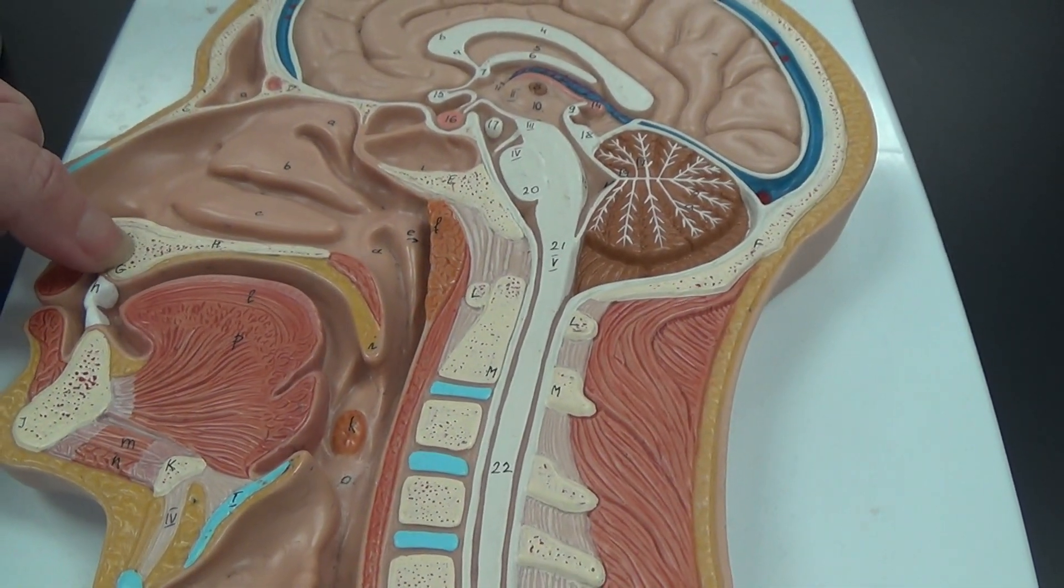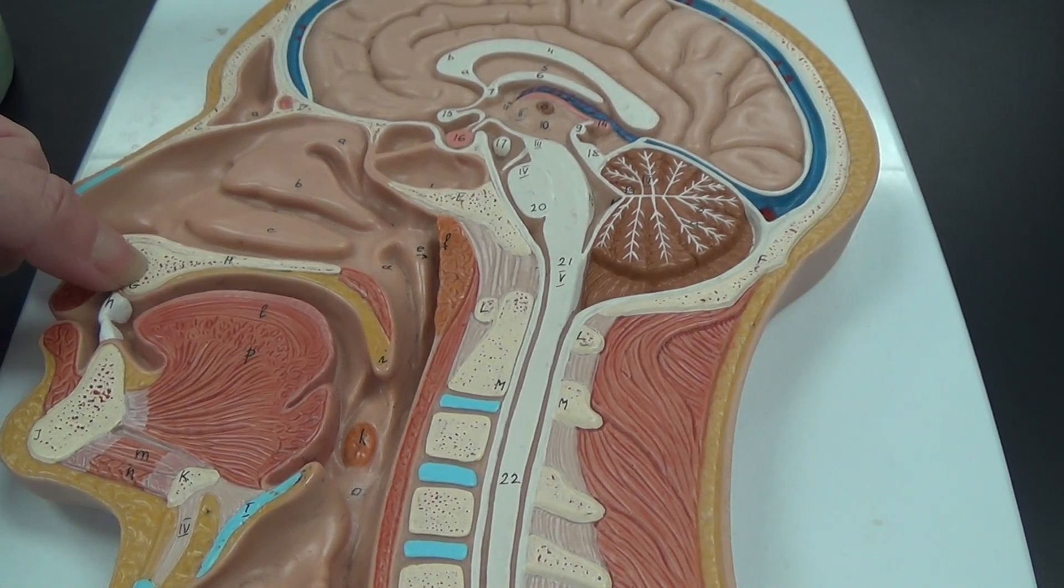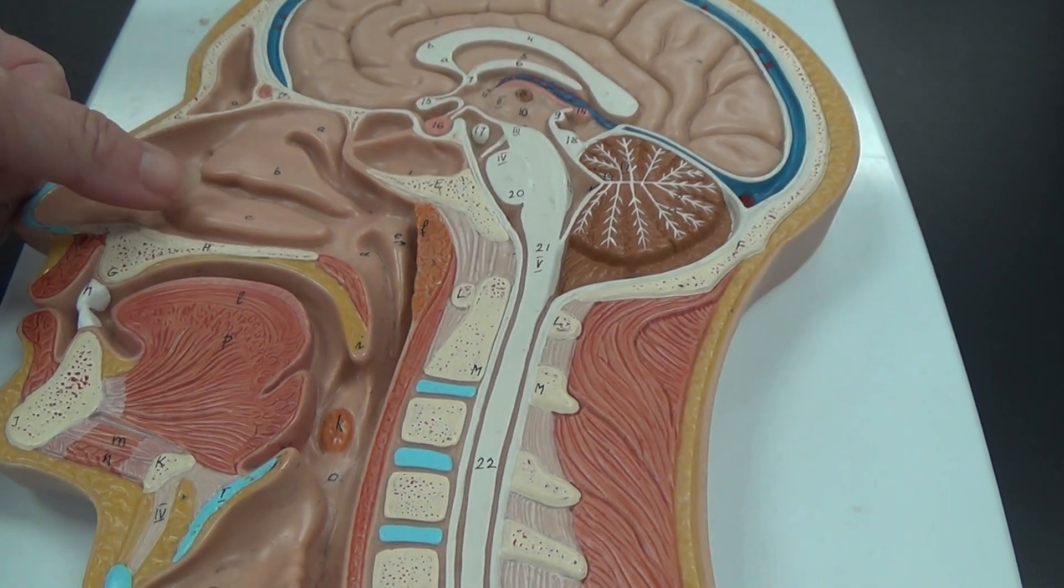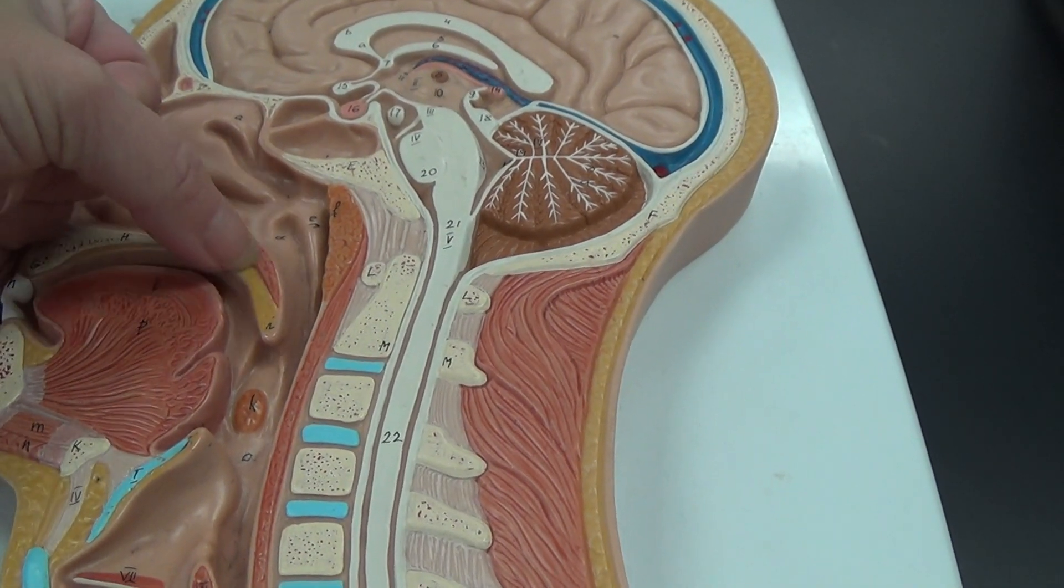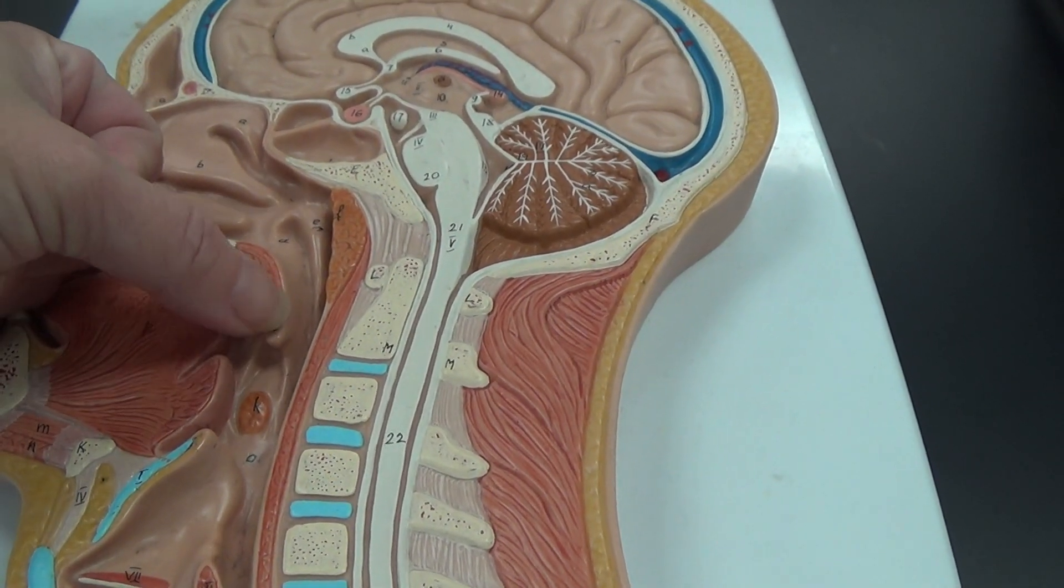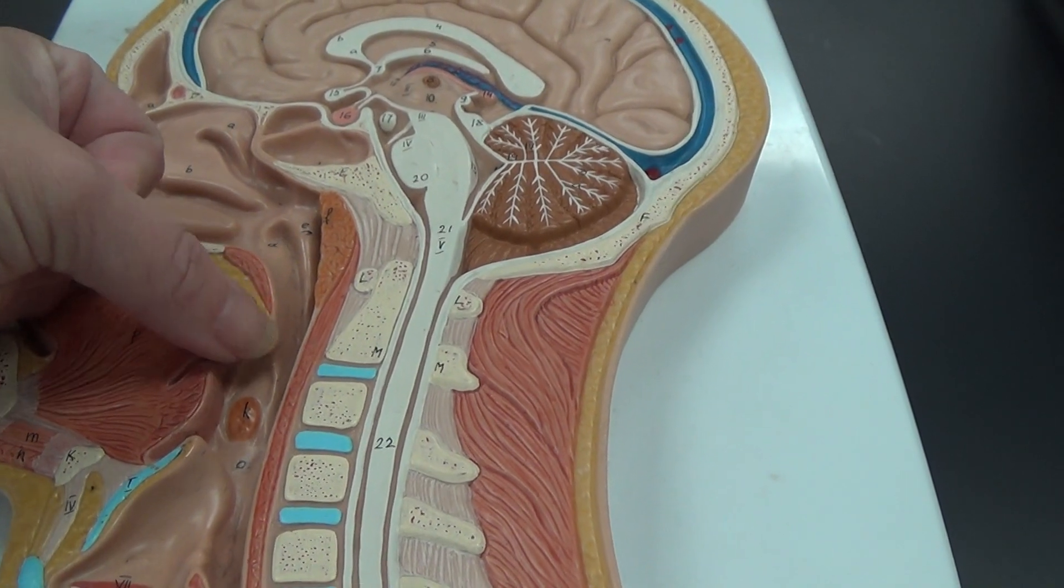The hard palate is the separation by bone between the nasal and oral cavity, shown in white here. The soft palate is the muscle at the end, and the uvula is the bit that hangs down behind that.